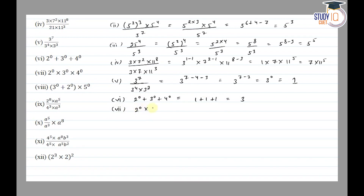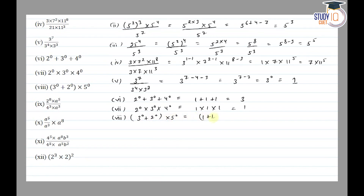The seventh part is: 2 raised to the power 0 into 3 raised to the power 0 into 4 raised to the power 0. This becomes 1 into 1 into 1, equal to 1. The eighth part is: 3 raised to the power 0 plus 2 raised to the power 0, into 5 raised to the power 0, equal to 1 plus 1 into 1, equal to 2 into 1, equal to 2.